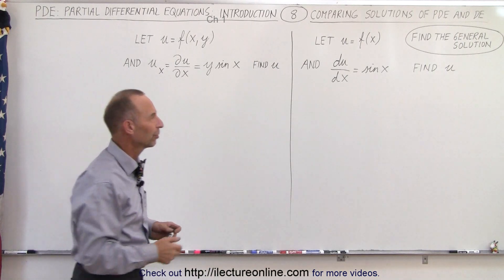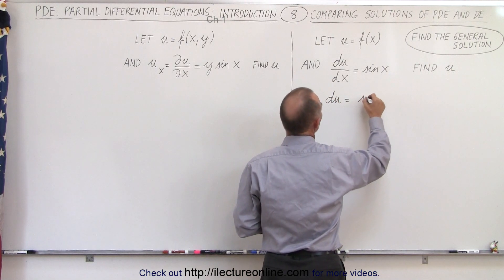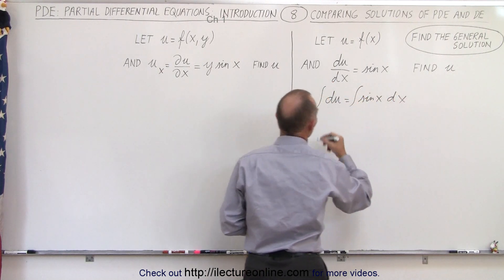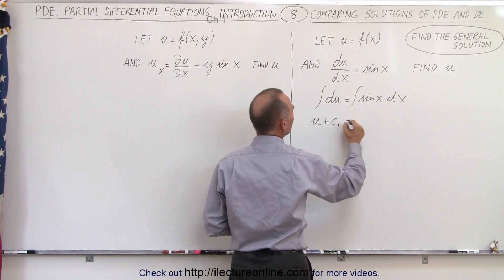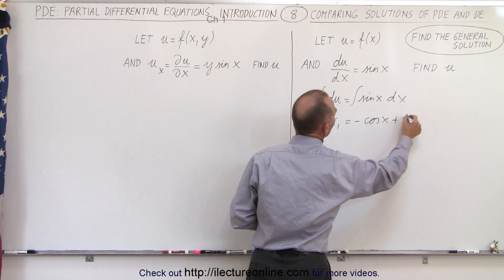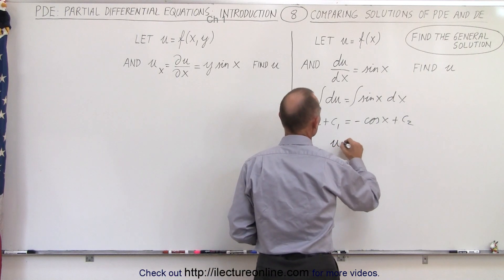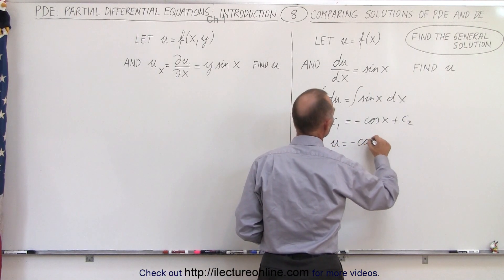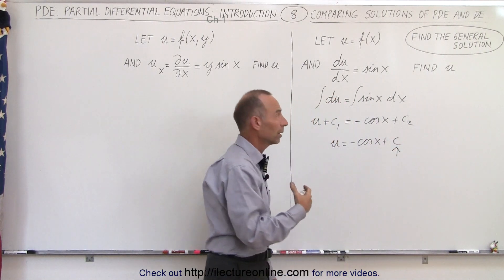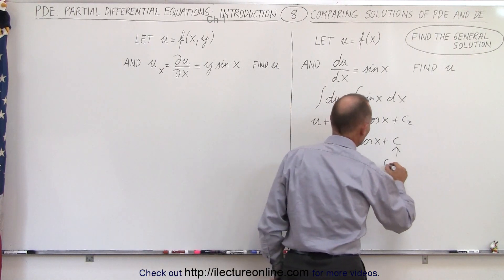Let's start with the easy one first. We can separate the variables and write that du is equal to the sine of x times dx. Then we take the integral of both sides. On the left side we get u, and on the right side we get the negative cosine of x plus a constant of integration. So u is equal to the negative cosine of x plus a constant of integration. When we have a differential equation and solve it, we end up with a constant of integration.